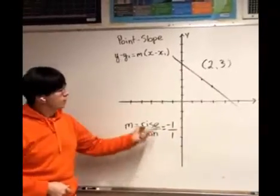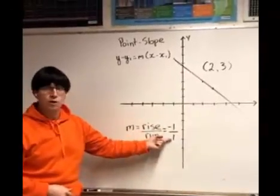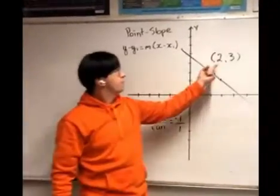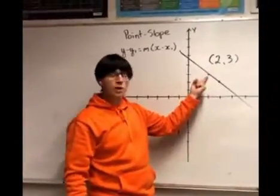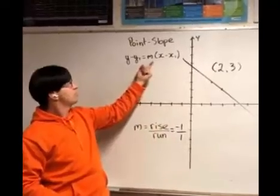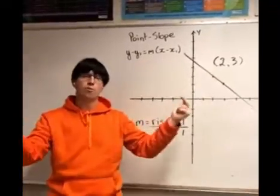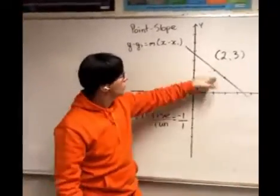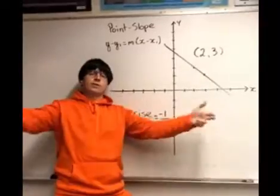Rise over 1 is your slope. For example, you get a negative 1 over 1 — that's our slope. If we have point (0, 23), put (0, 23) into this equation with your slope, and you get a point-slope form.